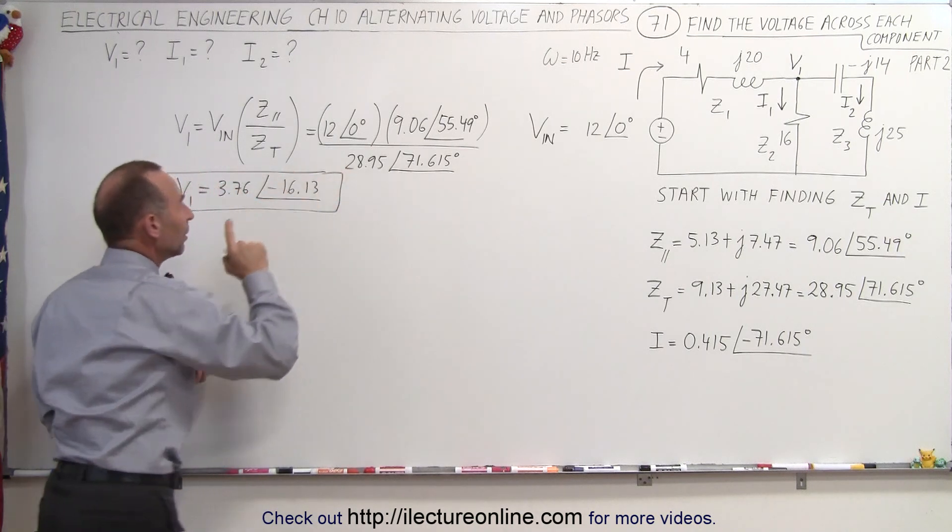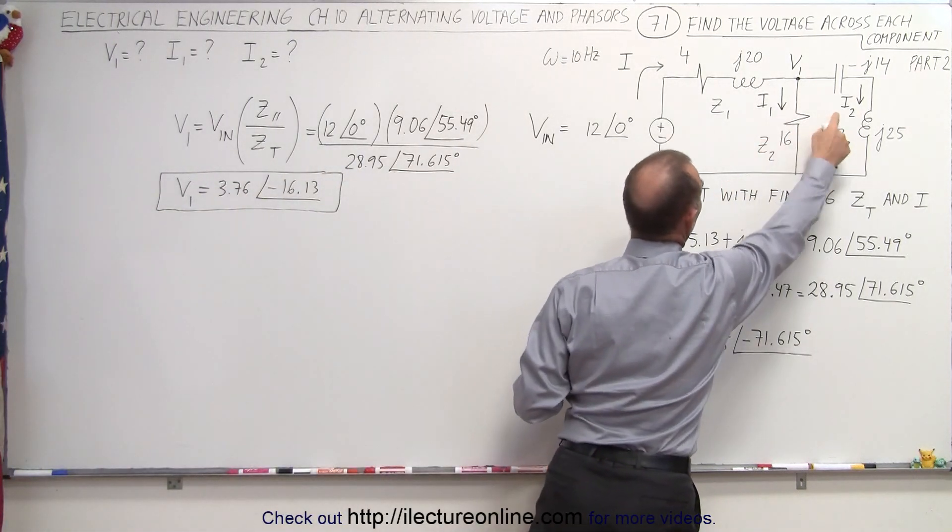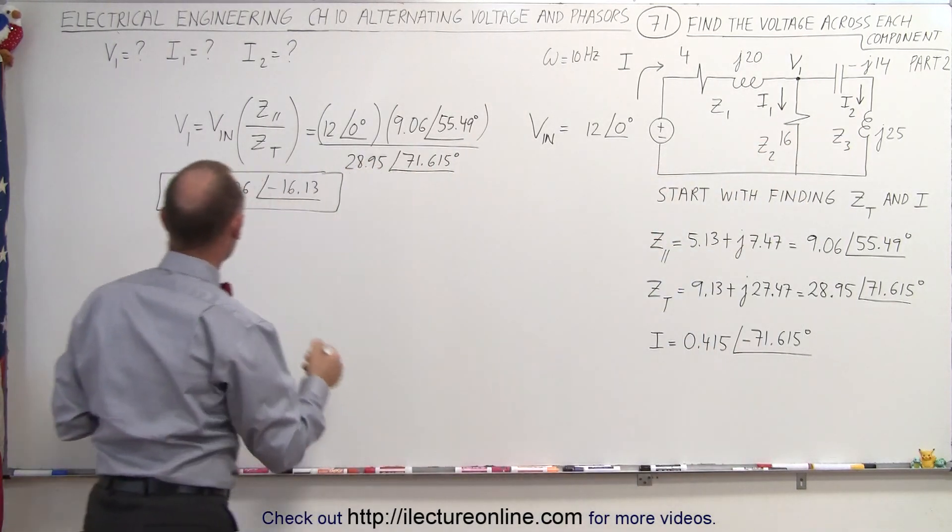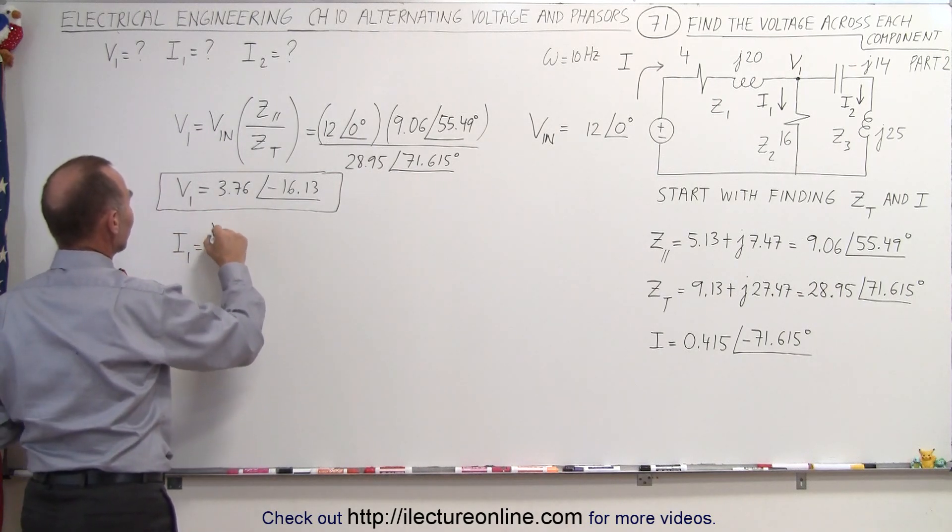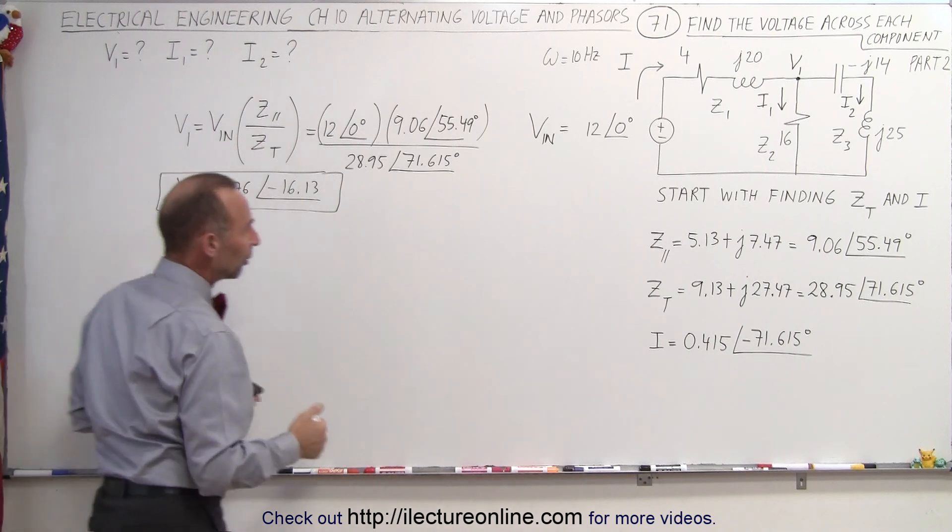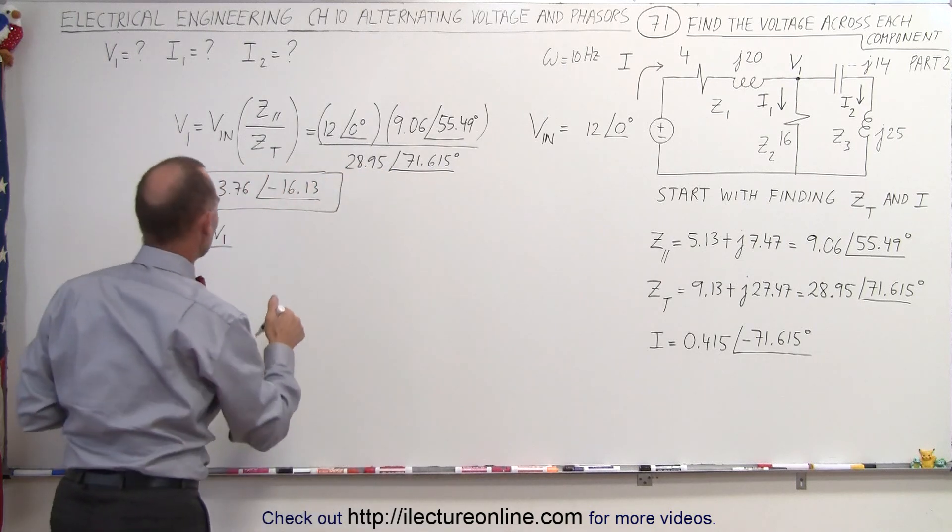Now that we have the voltage at 1, we can now determine the current through the first branch here and the current through the second branch, because we know from Ohm's law that I is equal to V over R. In this case, that would be V1, and instead of R, we're going to use the impedance of that branch right there. So that would be Z2